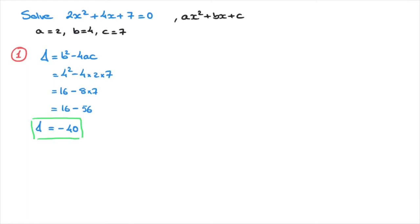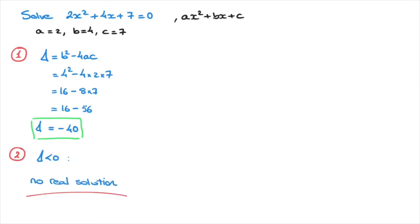Now that we've calculated the discriminant delta, we move on to step 2. We solve this equation according to the sign of delta. We can see quite clearly that delta is negative, and since delta is negative, this quadratic equation has no real solution — and that's what we write as our answer. As we move into higher-level mathematics, we'll see that when delta is negative, the quadratic equation actually has something called complex solutions. But for now, all we need to know is that this quadratic has no real solutions.